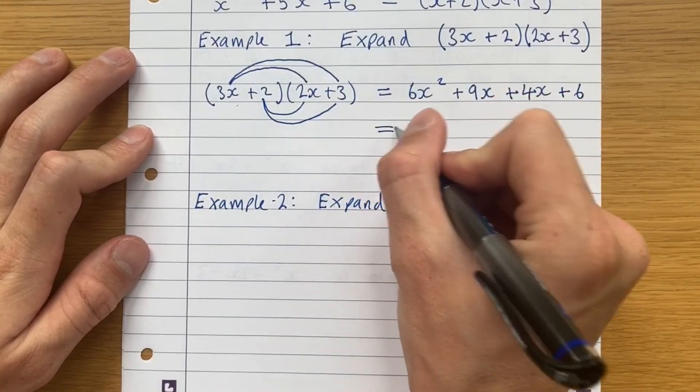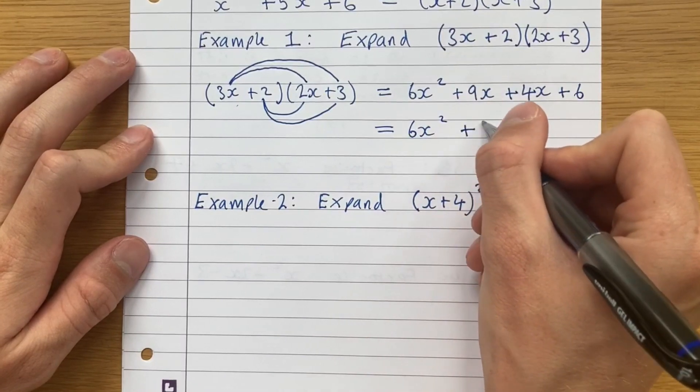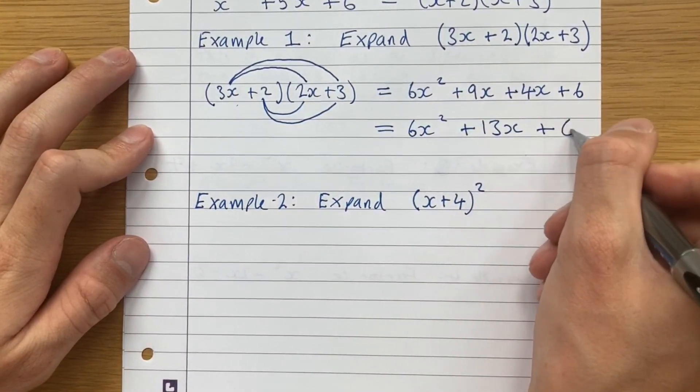So again, we can simplify by adding the 9 and the 4, 9x and the 4x, sorry. Let's give 6x squared plus 13x plus 6.